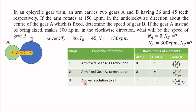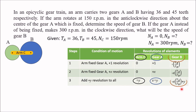In step three, we add +y revolutions to all elements in the row. So the arm becomes y, gear A becomes x + y, and gear B becomes −x × T_A / T_B + y. The final row represents the actual speeds: y is the speed of arm C, x + y is the speed of gear A, and the last expression is the speed of gear B.